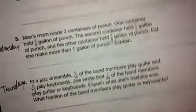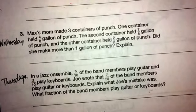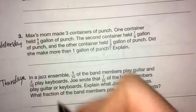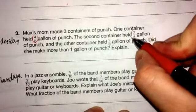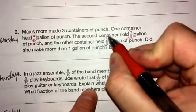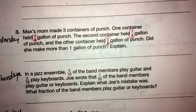Alright, and then our word problem for today. Max's mom made 3 containers of punch. One container held 4/8 a gallon of punch. The second container held 7/8 gallons. And the other container held 2/8. Did she make more than 1 gallon of punch? Explain.